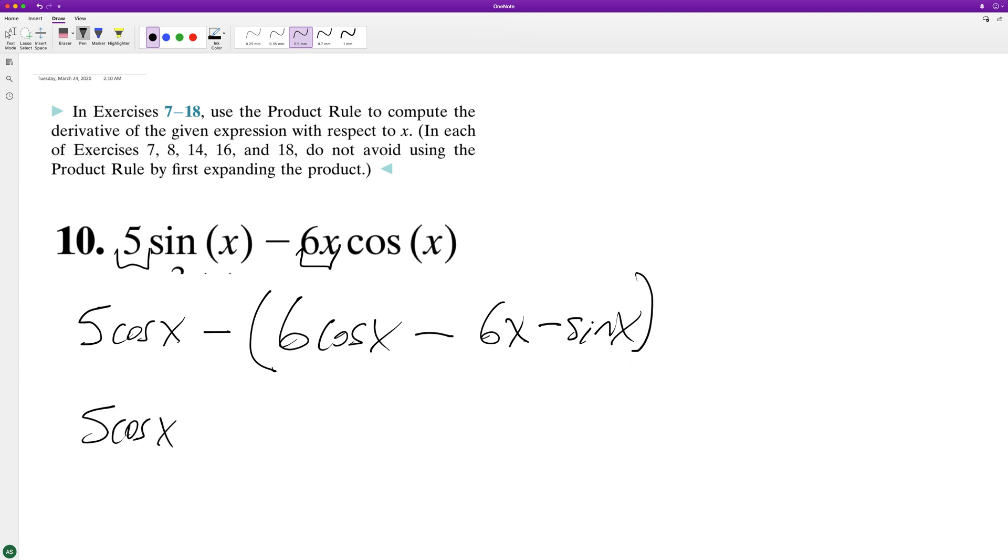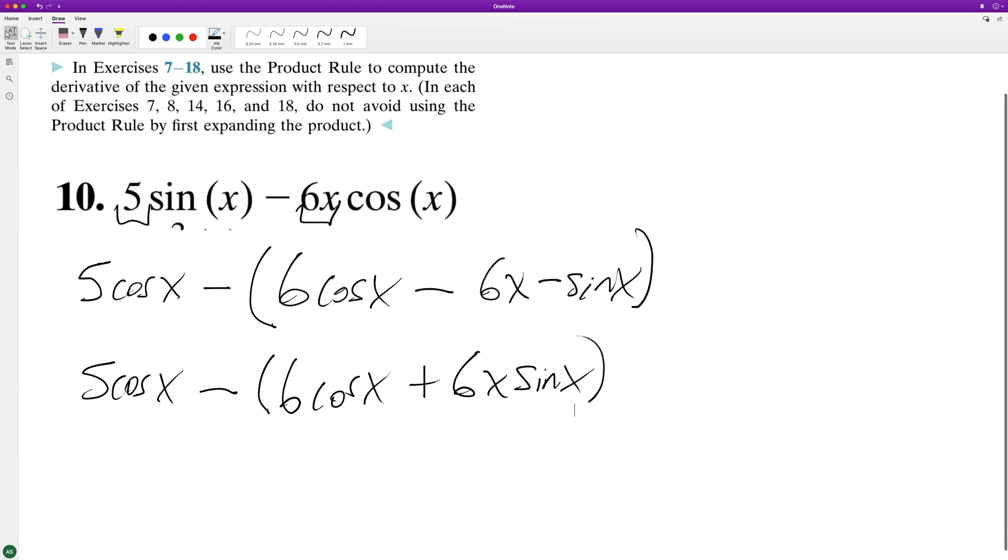So this is a little complicated here. This becomes plus 6x sine of x, and then we distribute again.